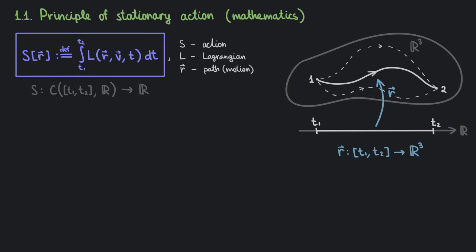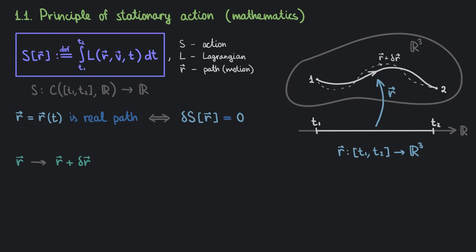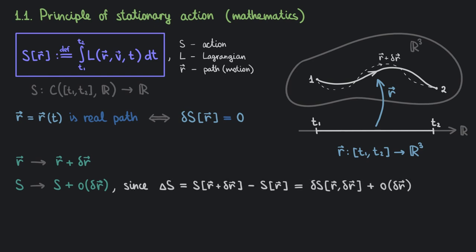The principle of stationary action states the following: among all the possible paths between points 1 and 2, the particle moves along the one that makes the action stationary — that is, the variation of S on such a path is 0. Variation is nothing more than the notion of the differential, but for functionals. So when we say the variation of S is 0 for some path R, that means that if we slightly change the path R, the corresponding change in the action is smaller in order than the change in R. Indeed, the change in action is just the variation of S plus a term that's smaller in order than dR, and since the variation is equal to 0, we are left with just O(dR).